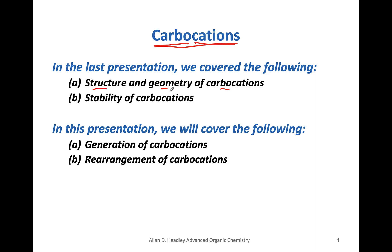Carbocations have sp2 hybridized carbons with a vacant p orbital. We looked at the stability of carbocations and determined that for alkyl carbocations — carbocations that have just carbon-containing groups and are not unsaturated — the stability order is: tertiary is more stable than secondary, more stable than primary, and much more stable than the methyl carbocation.